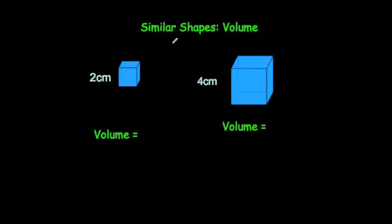In this video we're going to look at similar shapes and how the volumes are connected for similar shapes. Shapes are similar if one shape is an enlargement of another. I've drawn here two cubes — one with a side length of two centimeters and one with a side length of four centimeters.